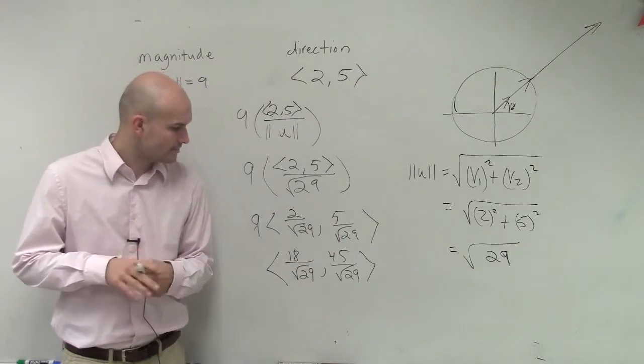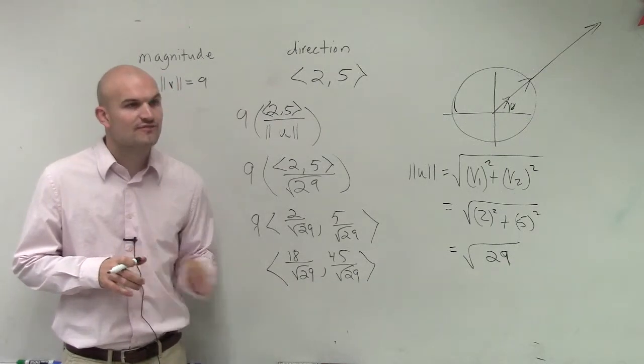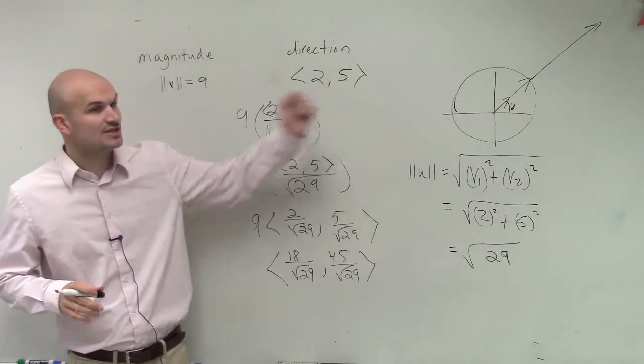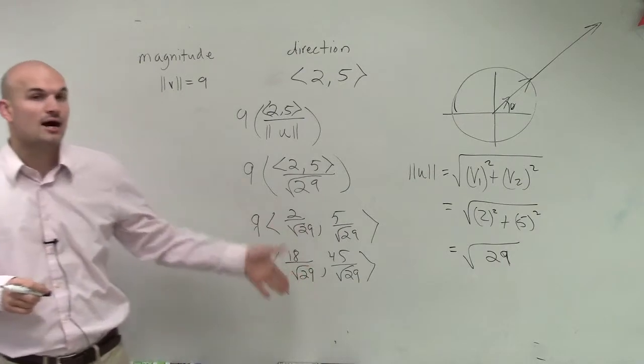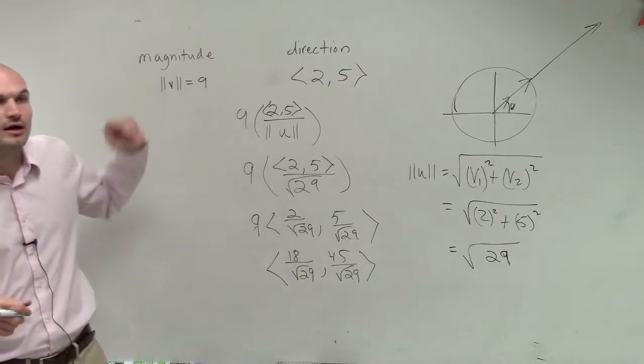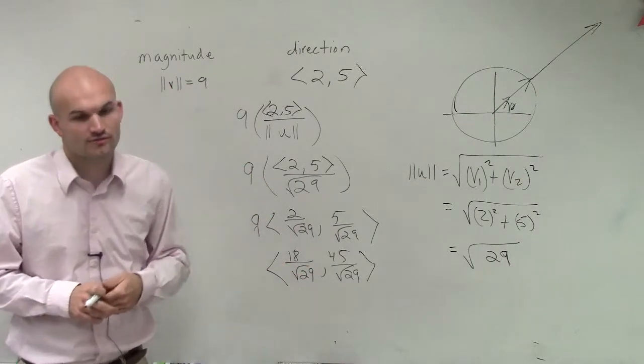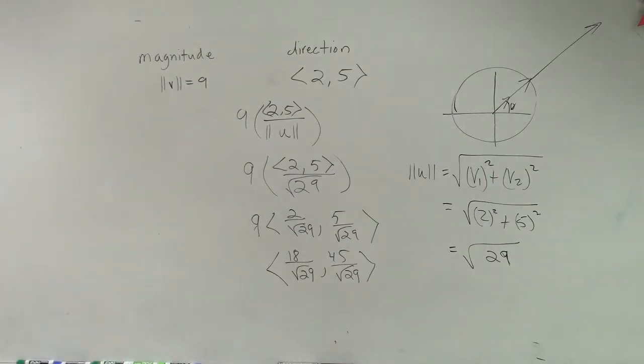Is that it? That's it. That's your vector with the same direction as 2 comma 5, but now with a new magnitude of 9. So that's what your new director format will be. So it's magnitude times u over.